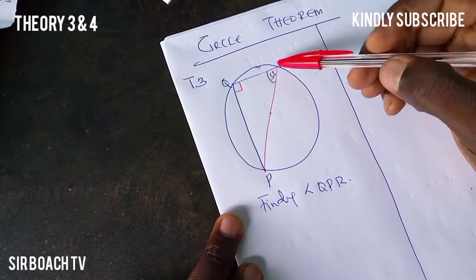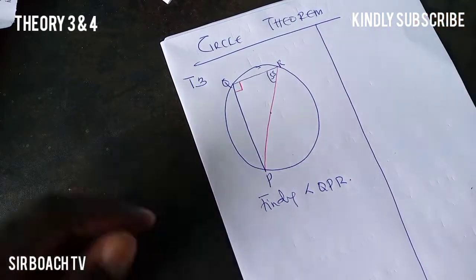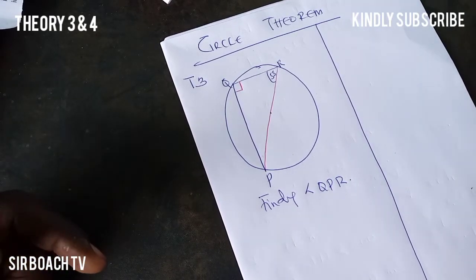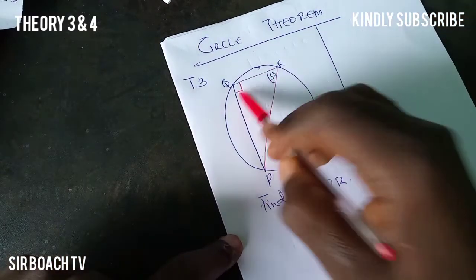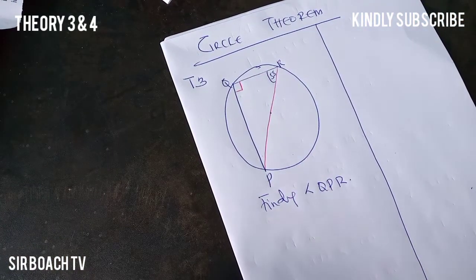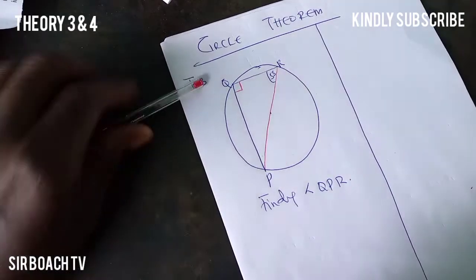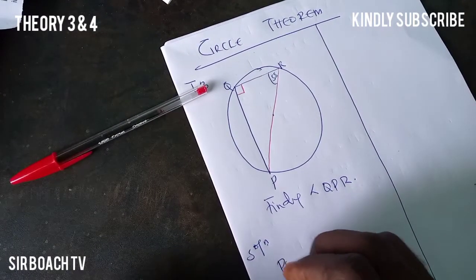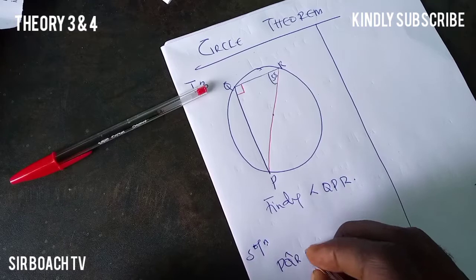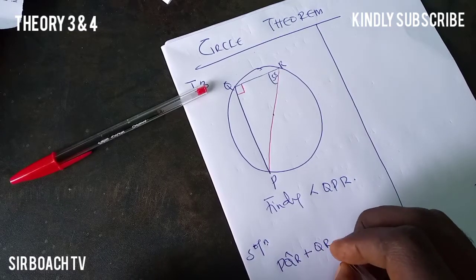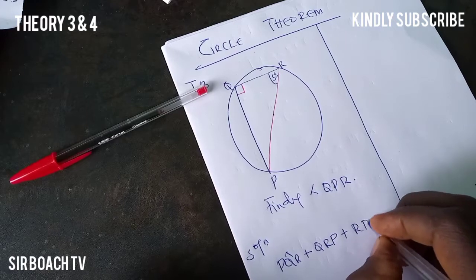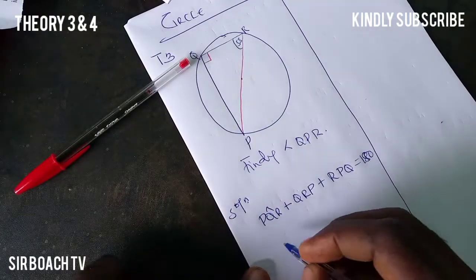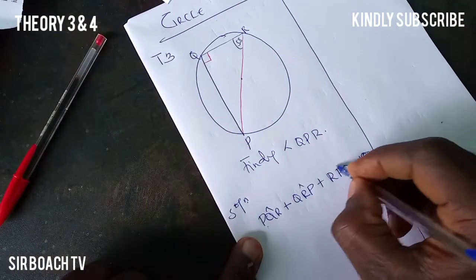The shape inside the circle is a triangle, and we know the interior angles of a triangle add up to 180 degrees. We know one angle is 58 degrees and another is 90 degrees, so we have to find the third. It will be: angle PQR plus angle QRP plus angle RPQ equals 180 degrees.